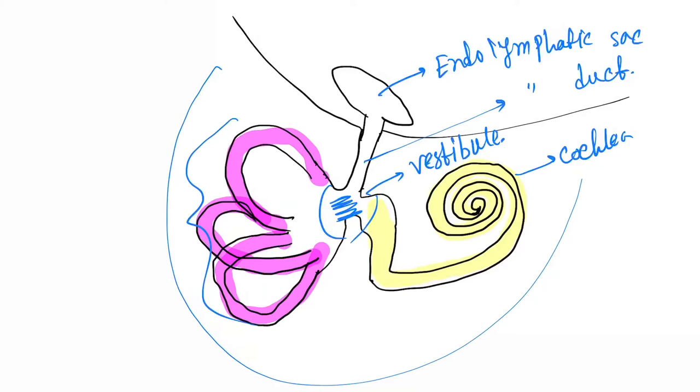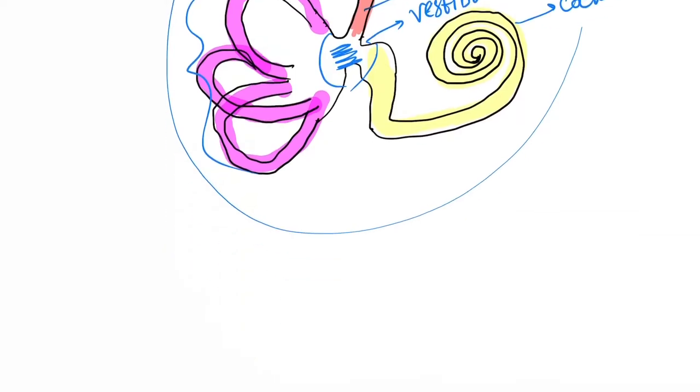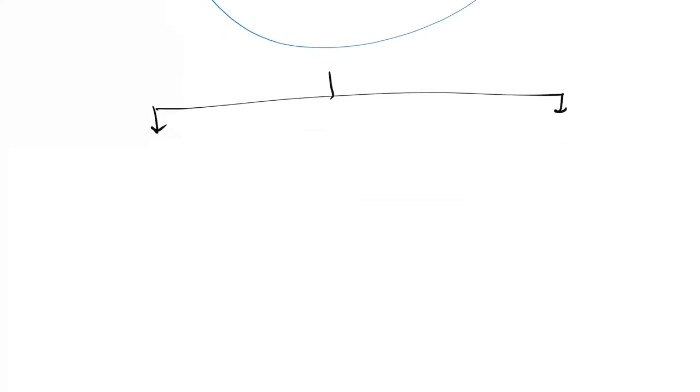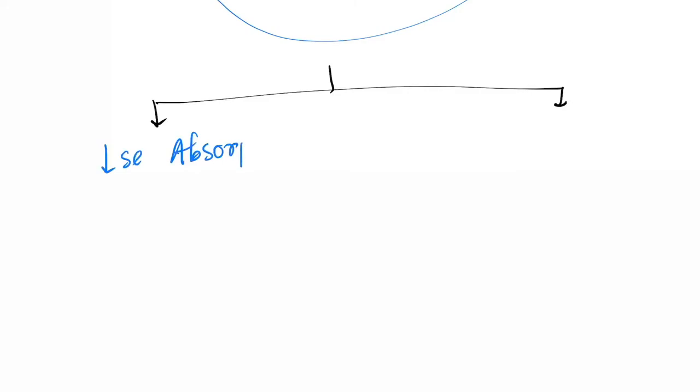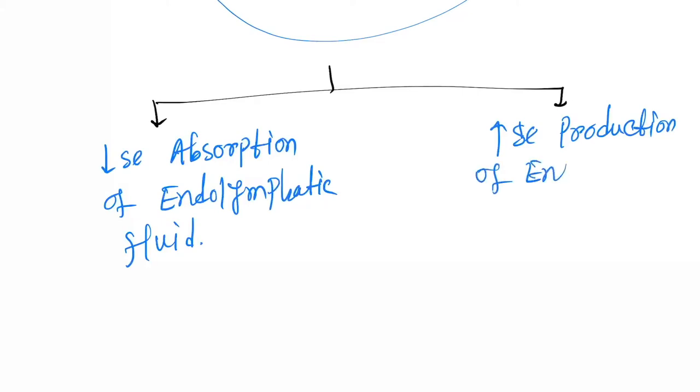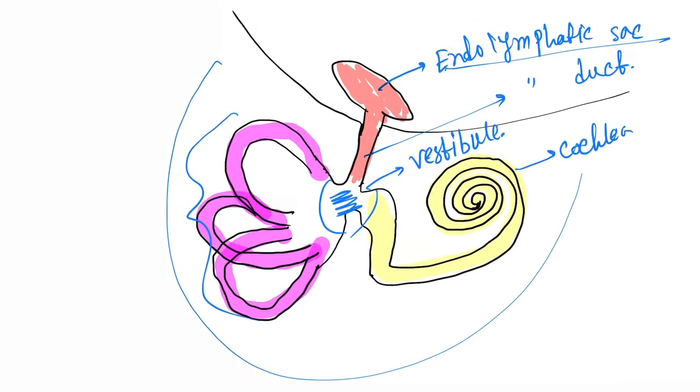In the endolymphatic sac and endolymphatic duct, there is endolymphatic fluid which is absorbed by the endolymphatic sac. But due to disorder or various reasons, two things can occur: first is decreased absorption of endolymphatic fluid, and second is increased production of endolymphatic fluid. Both of these will cause Meniere's disease.